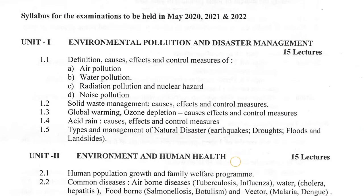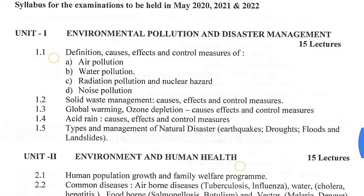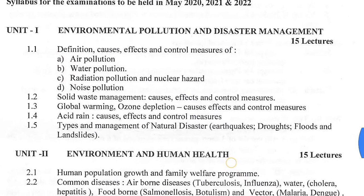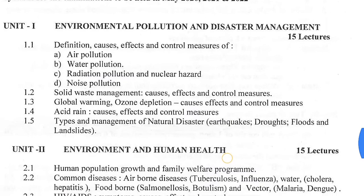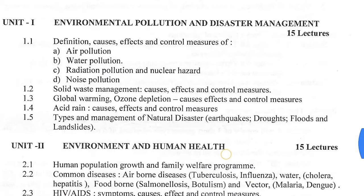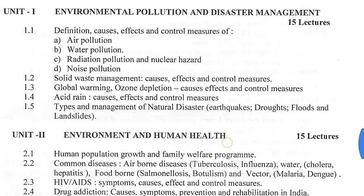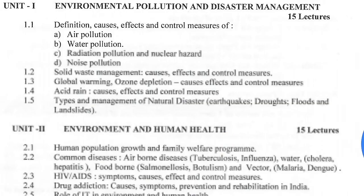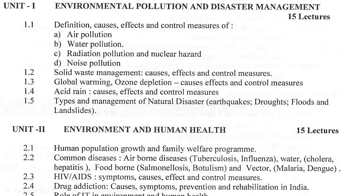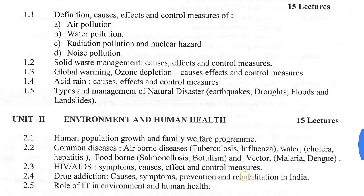Further topics in Unit 1 include global warming, ozone depletion — causes, effects and controlling measures; acid rain — causes, effects and controlling measures; and types and management of natural disasters including earthquakes, droughts, floods and landslides.